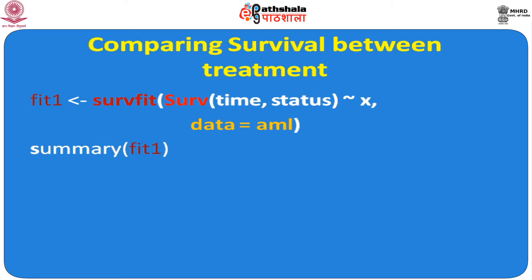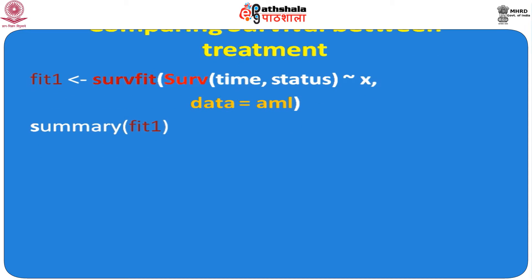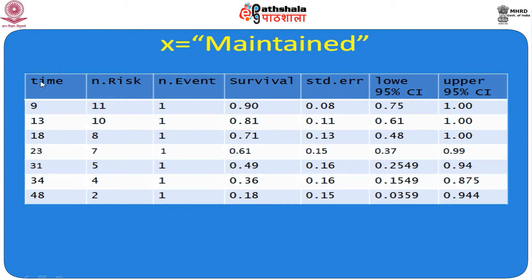The output is shown separately for patients treated with maintained therapy. The first column shows the time intervals: 9, 13, 18, 23, 31, 34, and 48 months. At 9 months, 11 patients were at risk. When time shifted from 9 to 13 months, the number at risk dropped to 10, because one patient died — that patient is included as n.event in column 3.